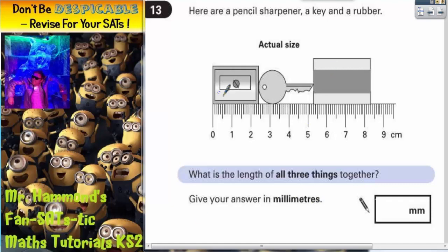Well, as you can see, all three things together, just double check that it starts level with zero, which it does, so that's fine. All three things together go to 8.1, 0.2, 0.3. So this measurement here is 8.3 centimeters.